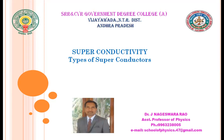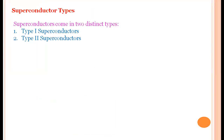Based on their properties, these superconductors are of two types. One is type 1 superconductor and the second one is type 2 superconductor.